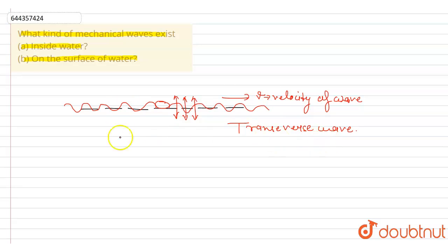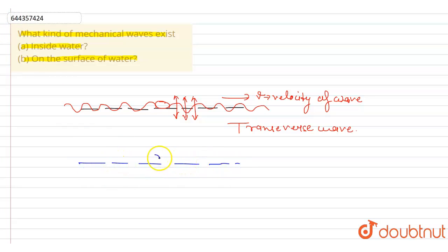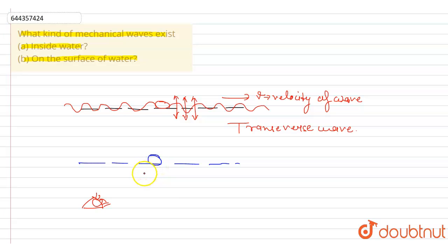So on the surface of water, a transverse wave exists. Now for case A — when we are observing from inside the water — let's say here is a stone and we are observing from inside. When we throw the stone, the inside water particles move in a certain way.